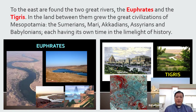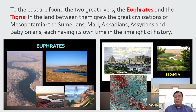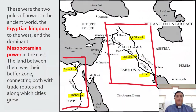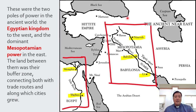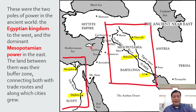To the east are found two great rivers: the Euphrates and the Tigris. In the land between them grew the civilizations of Mesopotamia. That's why you call it Mesopotamia — it means 'between two rivers,' from Meso and Potamos meaning river. You see the civilizations of the Sumerians, the Mari, the Akkadians, the Assyrians, and the Babylonians, each having its own time in the limelight of history. These were the two poles of power in the ancient world — the Egyptian kingdom to the west and the Mesopotamian power to the east — and the land between them was their buffer zone.